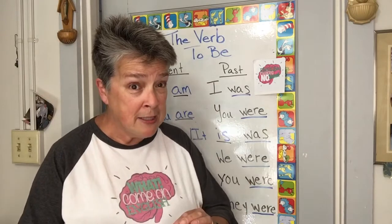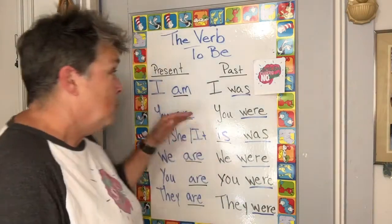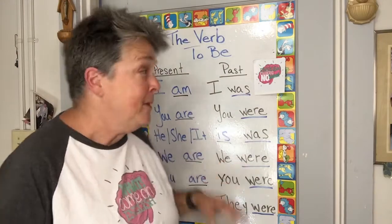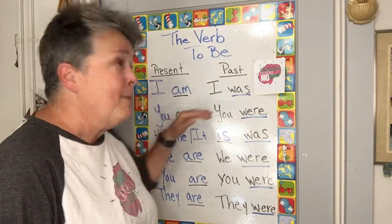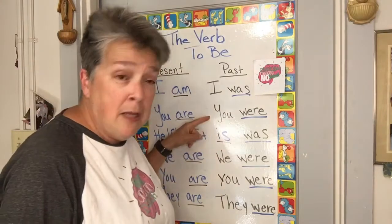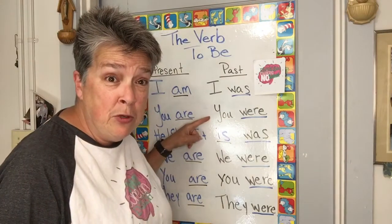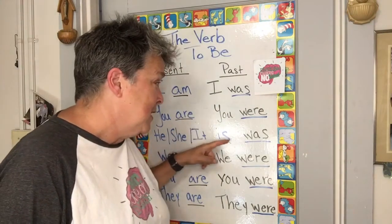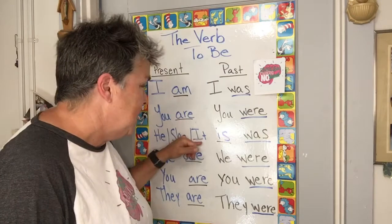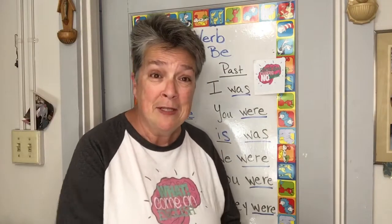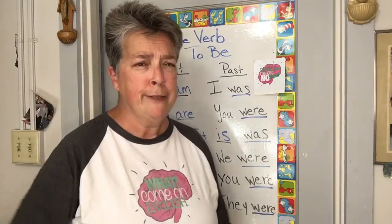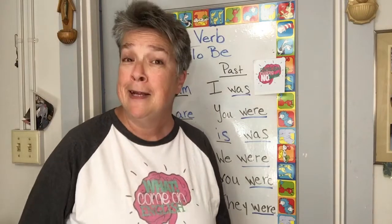In the past tense, we make totally different words for the verb to be. In present, it's I am. In the past, it's I was. Past tense for you: you were. Past tense for he, she, it: he was, she was, it was. He was happy. She was happy. It was sad. Got it?